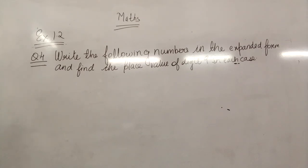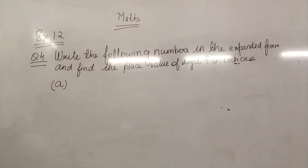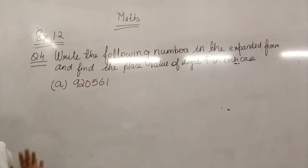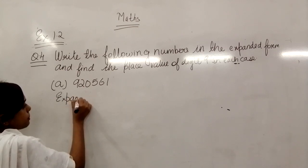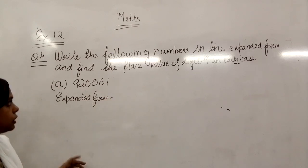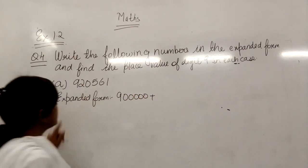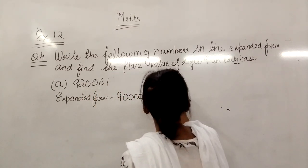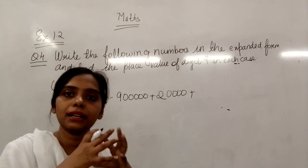So what is the first question here? Question number 4A. The number is 9, 2, 0, 5, 6, 4. Now you have to write this in expanded form. You will write the question, then you will write expanded form. Then you will write the first digit. Then you see 5 zeros. Then the number is 2, and the remaining numbers you will put 4 zeros.